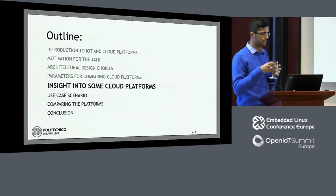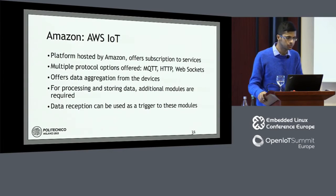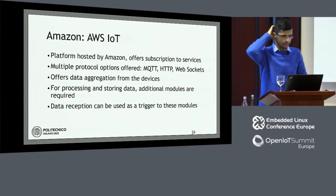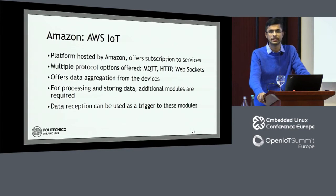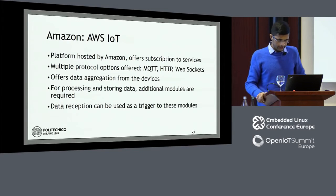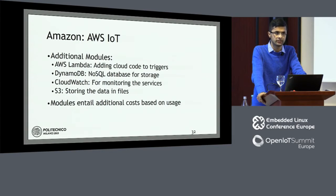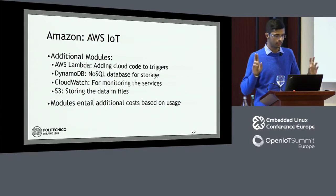Now I'd like to talk about the cloud platforms considered for our use case. First, Amazon's AWS IoT offers multiple protocols: MQTT, HTTP, and WebSockets. With AWS IoT, the data arrives at the platform and is then in the user's hands in terms of what to do with it — we can write a script to store data in a NoSQL database, visualize and monitor services with CloudWatch, or store raw files on Amazon S3. Each module is priced separately on a pay-as-you-go model.